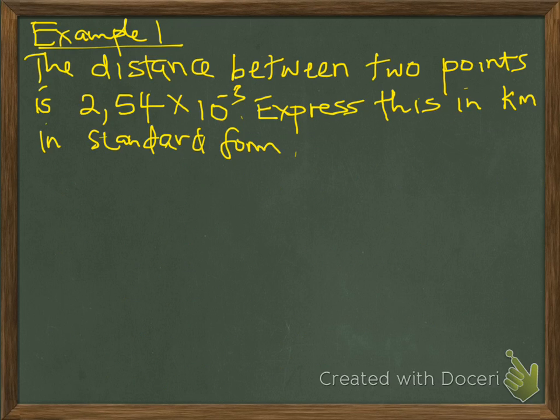Let's look at Example 1. The distance between two points is 2.54 times 10 to the power minus 3. Express this in kilometers in standard form.